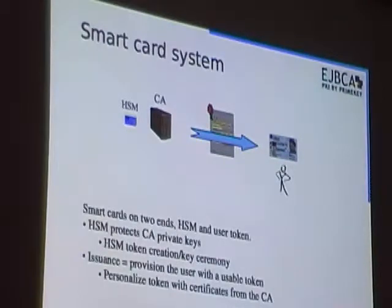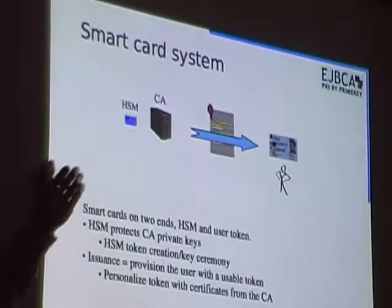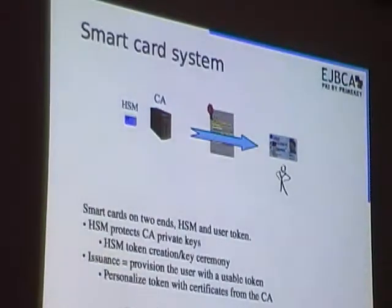If we concentrate on the smart card system — it's not only that you have a smart card and a smart card reader on your desktop. In order for it to work, you actually have a whole chain. You have a certificate authority in the back end who issues certificates for your PKI smart cards. You have a certificate that has to be transferred somehow to the smart card, and that's called the enrollment process.